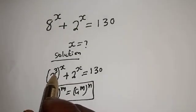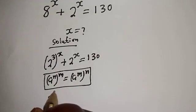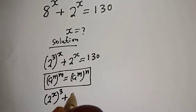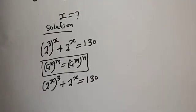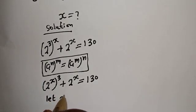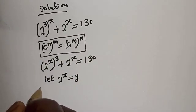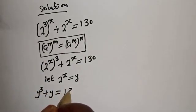Then, 2 raised to power 3 to the power of s can be written as 2 raised to power s to the power of 3, plus 2 raised to power s is equal to 130. Let's say 2 raised to power s is equal to y. So y raised to power 3 plus y is equal to 130.